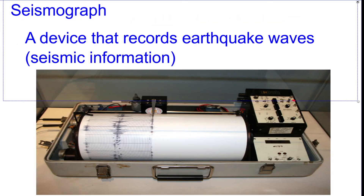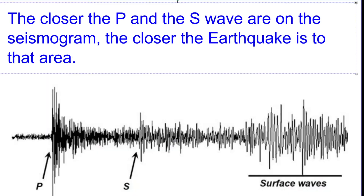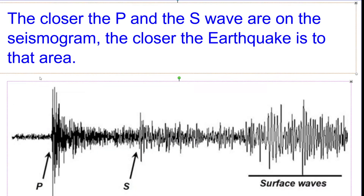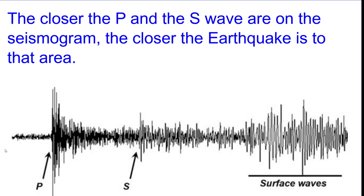A seismograph is a tool that we use to measure the magnitude of an earthquake, or the strength. They scribble lines on a piece of rolling paper, and that shows you how powerful the earthquake is and how far away it is. The rule of thumb is: the closer the P wave is to the S wave on the seismogram, the closer that location is to where the earthquake happened.